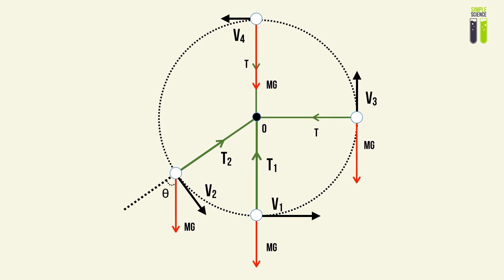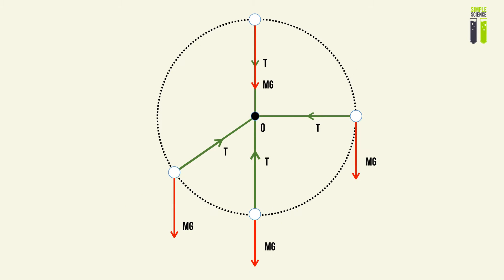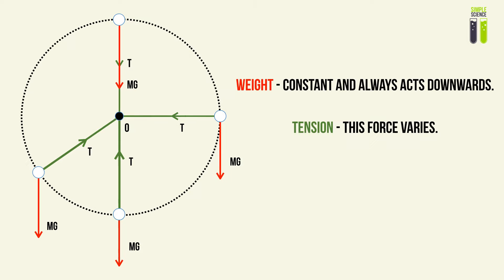To further simplify this model, we're going to take away some angles and the velocity and just look at the forces acting on our system. There are only two forces that should be acting on our system: that is the weight, which is always constant and always acts downwards, and tension, and this force varies.